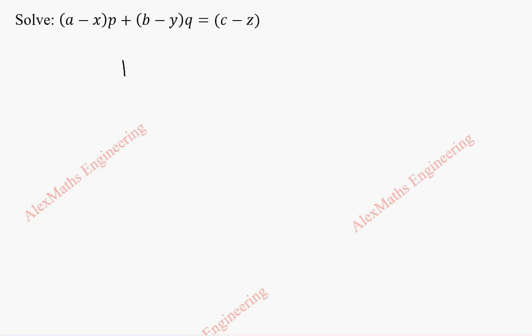This is of the form capital P into small p plus capital Q into small q equal to capital R. By comparison, we notice capital P is A minus X, capital Q is B minus Y, and capital R is C minus Z.